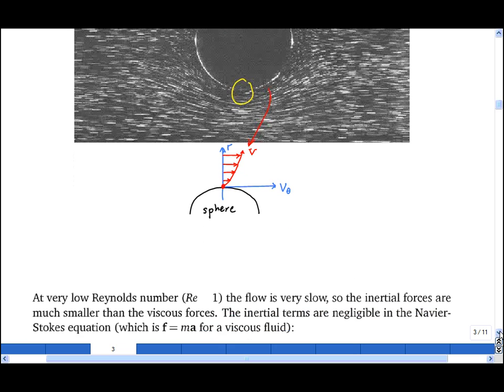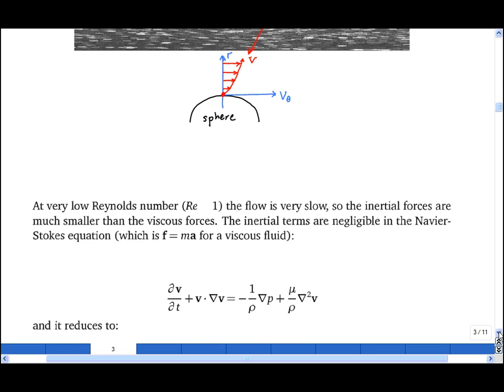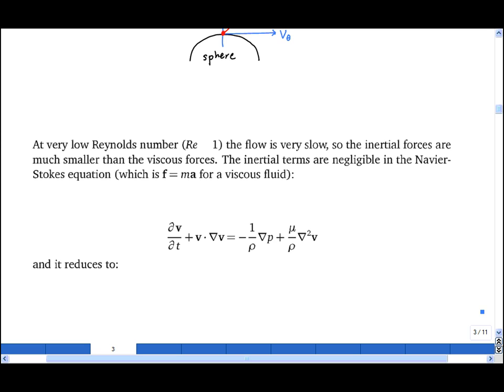At very low Reynolds number, the inertial forces are negligible compared with the viscous forces. If we take the Navier-Stokes equation, which is f equals ma written for a viscous fluid, I'll write as a equals 1 upon m times f. The acceleration is the material derivative of the velocity field, dv by dt. That can be written as ∂v/∂t plus v·∇v.